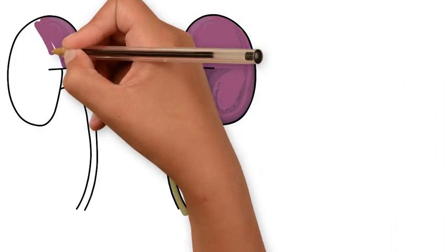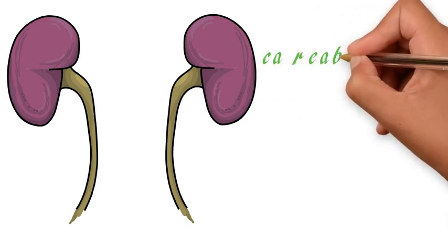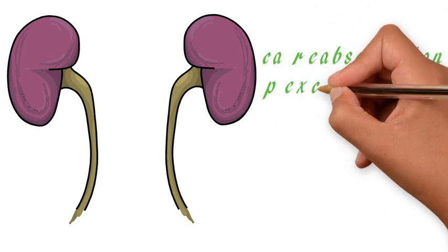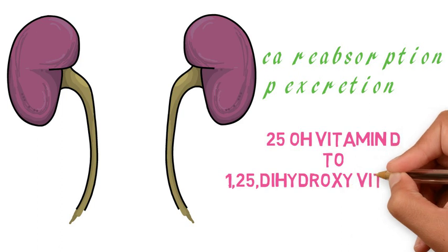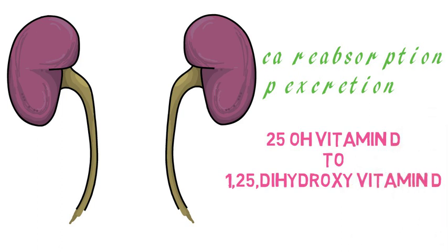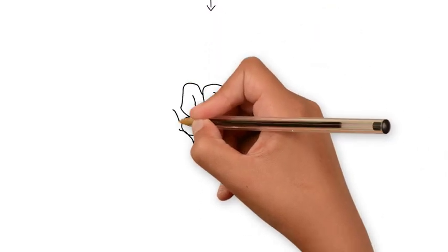Whereas in the kidneys, it increases calcium reabsorption and phosphorus excretion, as well as converts 25-hydroxy vitamin D to 1,25-dihydroxy vitamin D, which is the active form of vitamin D. This vitamin D in turn acts in the gut.